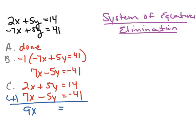Continuing to add, the next thing I'm going to add is 14 plus negative 41, and 14 plus negative 41 is negative 27. Now I have a new equation: 9x equals negative 27. I'm going to solve that equation for x — the only thing I need to do is divide by 9. When I take negative 27 divided by 9, I end up with negative 3. So we've found half of our answer: x equals negative 3.